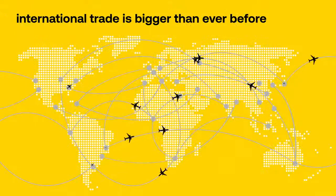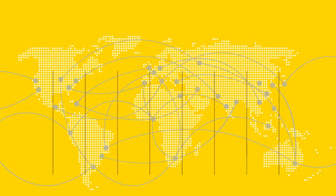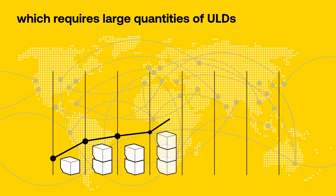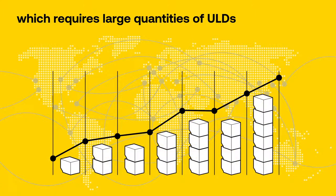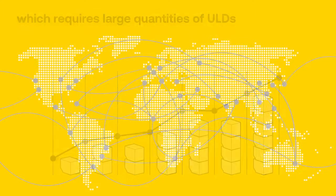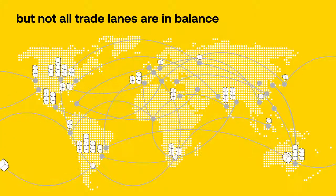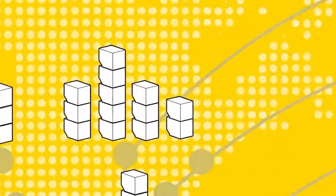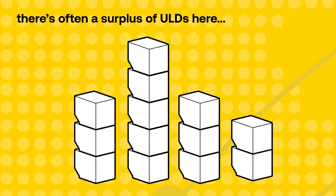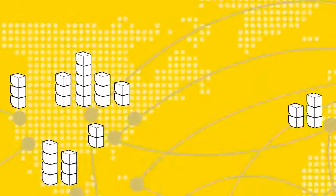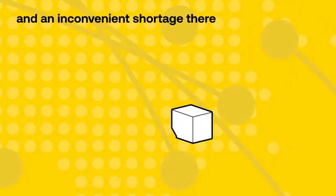International trade is bigger than ever before, and that requires large quantities of ULDs to transport all kinds of cargo around the world. But not all trade lanes are in balance — there's often an expensive surplus of ULDs here and an inconvenient shortage there.